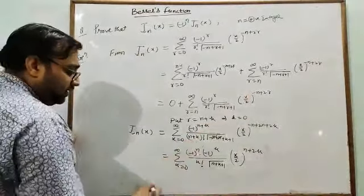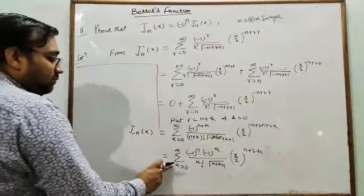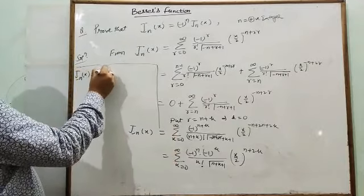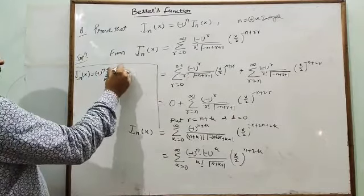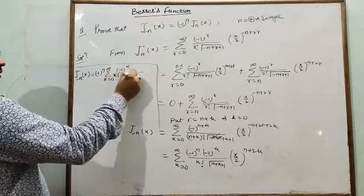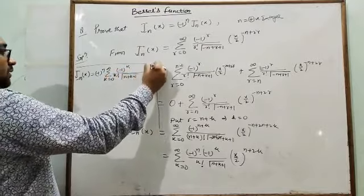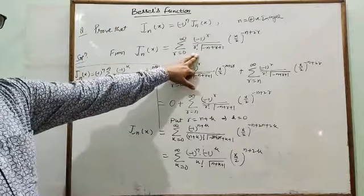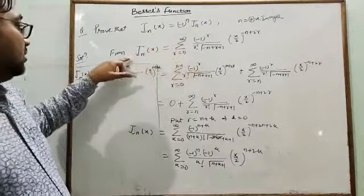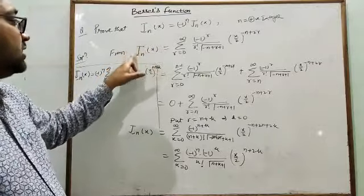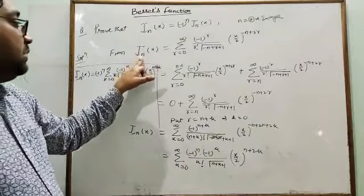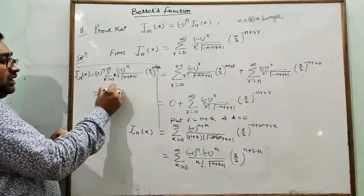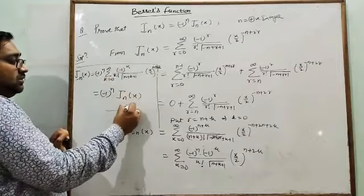Since the summation is only over k, (−1)^n can be taken outside: J_{-n}(x) = (−1)^n · Σ (k=0 to ∞) [(−1)^k / (k! · Γ(n+k+1))] · (x/2)^{n+2k}. Now, replacing the dummy variable k by r has no effect since the function depends only on n and x. The remaining sum is exactly J_n(x), completing the proof that J_{-n}(x) = (−1)^n · J_n(x).